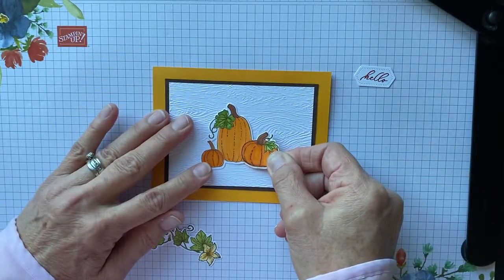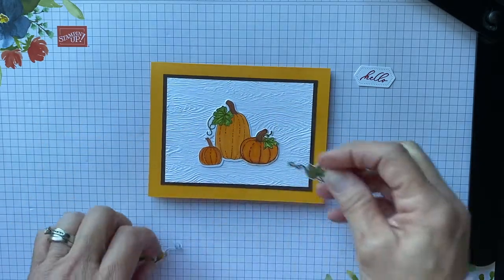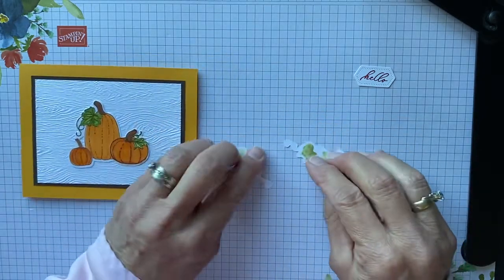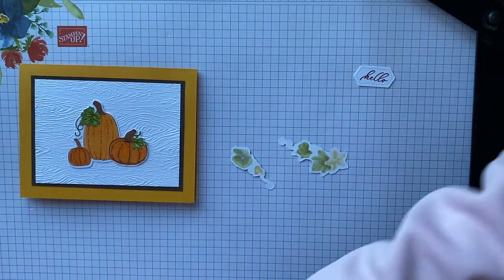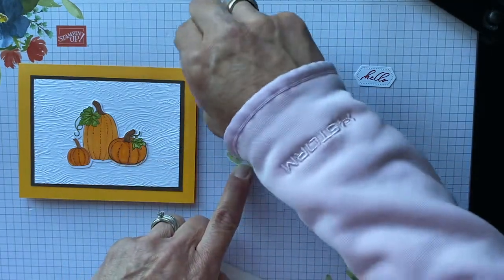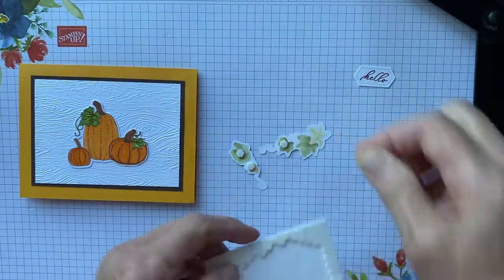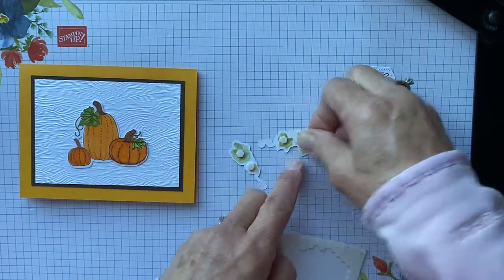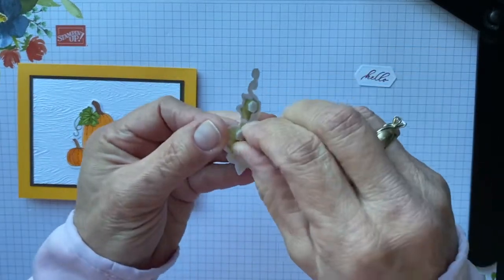And I'm going to put this right up here, and we're going to take these little pieces and pop them up with dimensionals. Let me find my dimensionals real quick. Here they are. I'm just using these little minis. And you don't need a lot, maybe three on this one. So we're going to take these, take the tabs off.